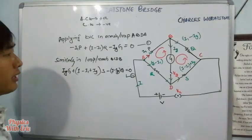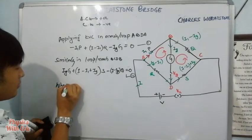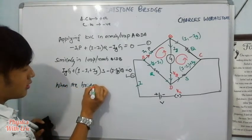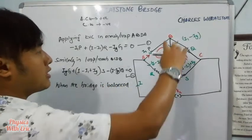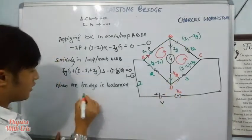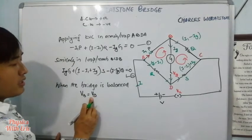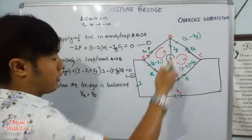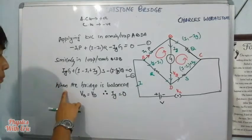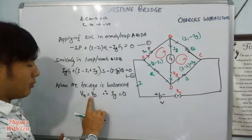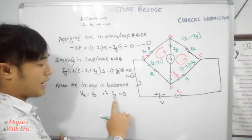The bridge should be balanced. When the bridge is balanced, the potential at point B will be equal to the potential at point D — that is, VB equals VD. When VB equals VD, there is no potential difference, so the galvanometer current Ig is equal to zero.